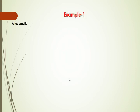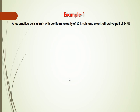Example problem: A locomotive pulls a train with a uniform velocity of 60 km/h and exerts an attractive pull of 24 kN. Calculate the work done by the locomotive in 20 minutes.